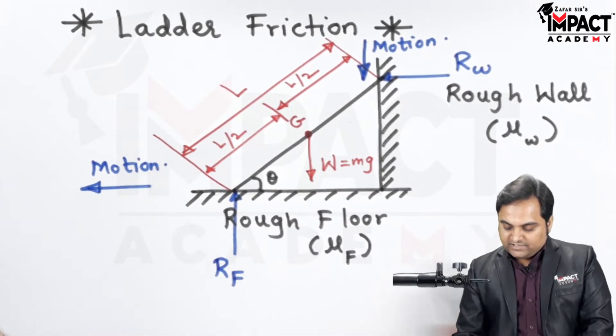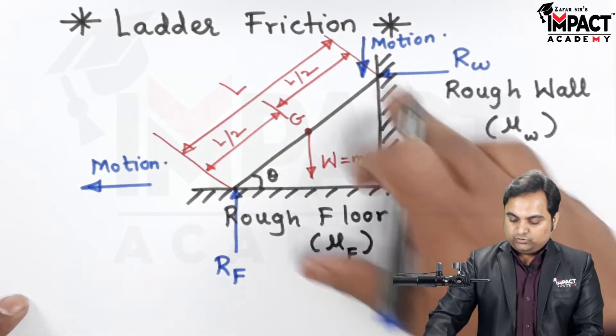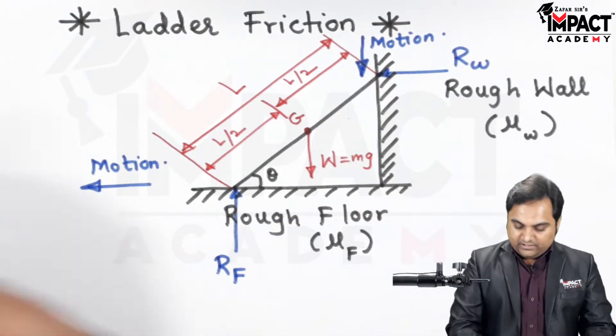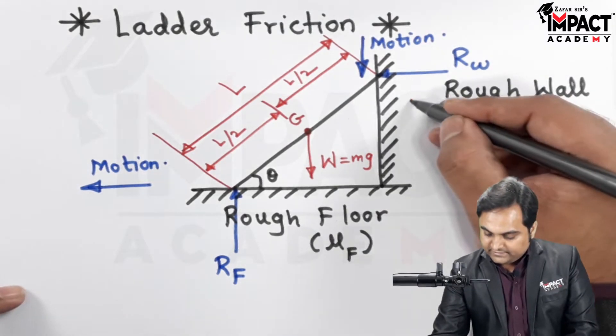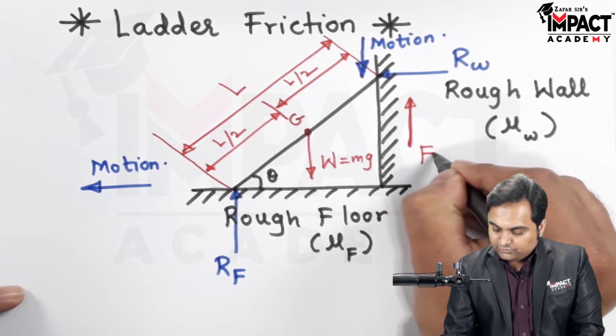Now as we know the motion is acting in the downward direction onto the wall, there will be a force of friction which would be acting upward, and that frictional force is denoted by F.